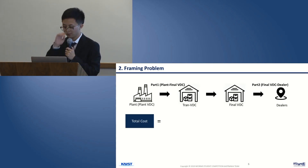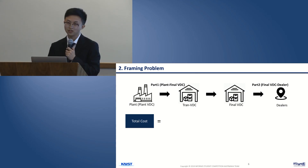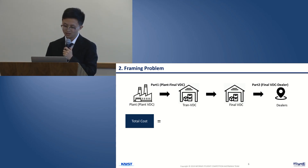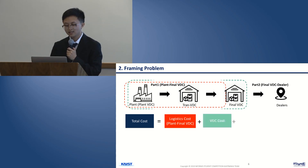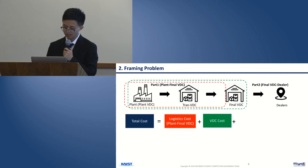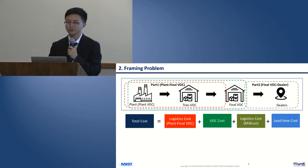As the calculation of total cost for delivering over 1.8 million vehicles is very complex, we try to frame it by looking at the cost structure. We divided the vehicle delivery process into two parts: part one is from plant to final VDC, and part two is from final VDC to dealer. The total cost is divided into four parts: logistic cost from plant to final VDC, VDC cost (including opening cost, vehicle handling cost, and overflow cost), milk-run logistic cost from final VDC to dealer, and lead time cost for each vehicle.